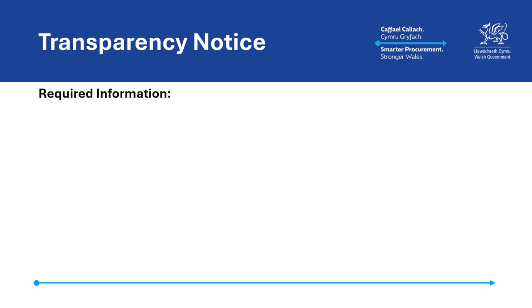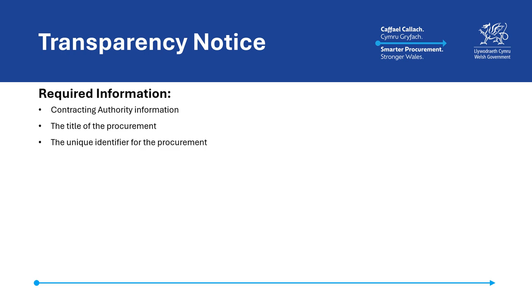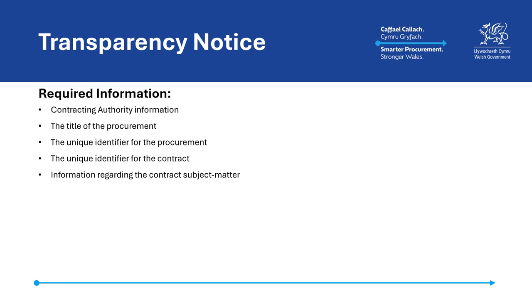The following information must be included when publishing a transparency notice, though please note that authorities should refer directly to the regulations and associated guidance, as this information is only being provided as a general guide to the notice requirements. The required information includes: information about the contracting authority; the title of the procurement; the unique identifier for the procurement; and, in the case of a procurement where there has been a switch to a direct award from another procedure in accordance with section 43 of the Act, the unique identifier allocated to the procurement before the switch to direct award; and the unique identifier for the contract if it is known when the transparency notice is published.